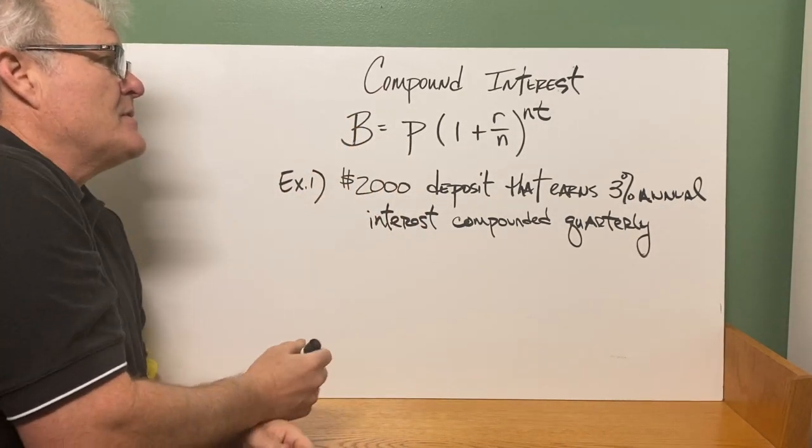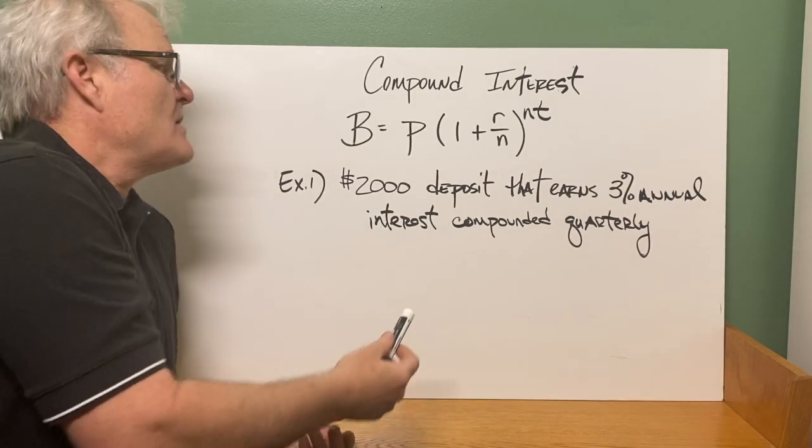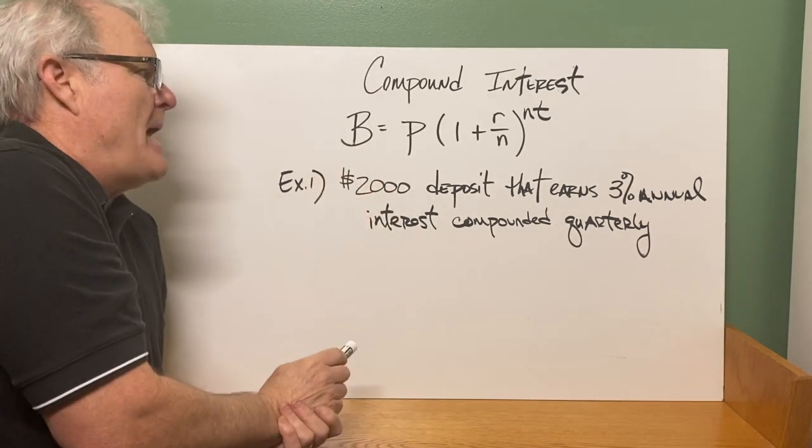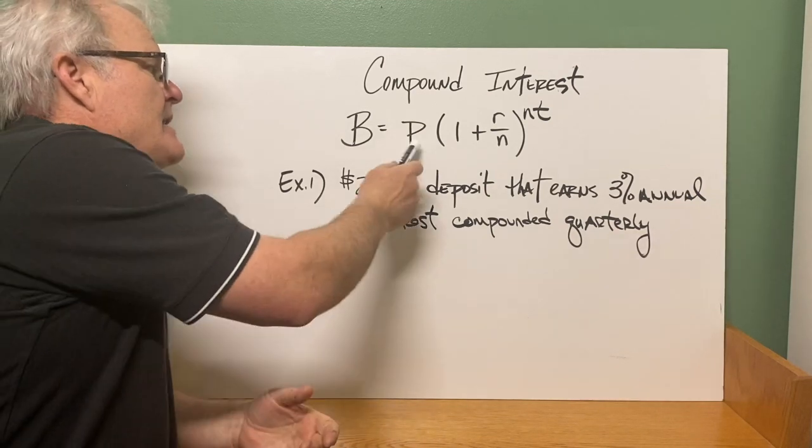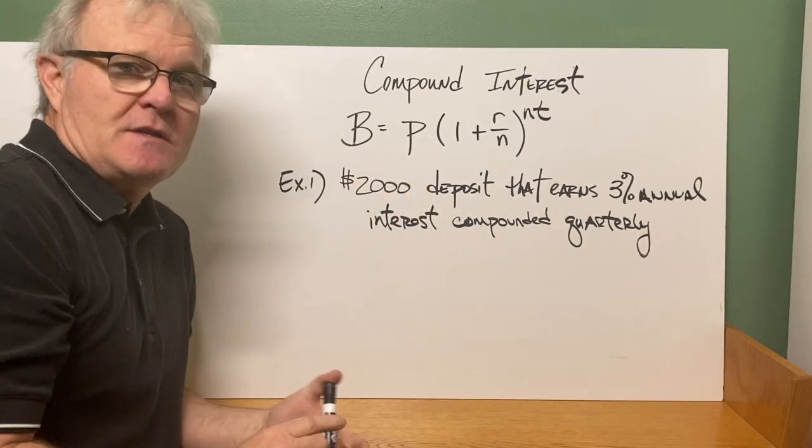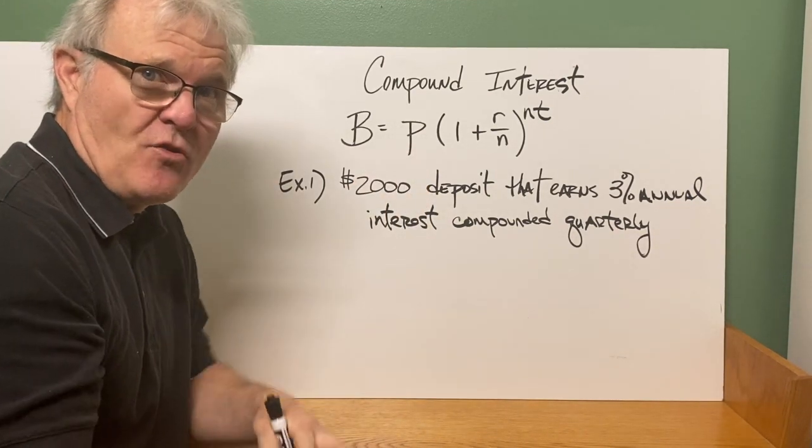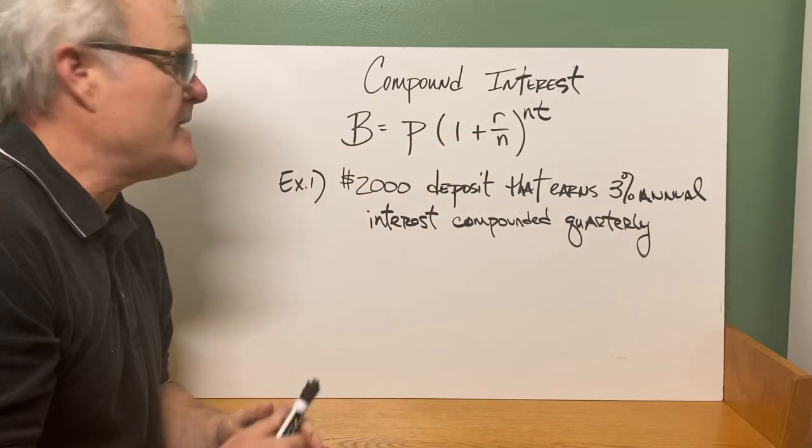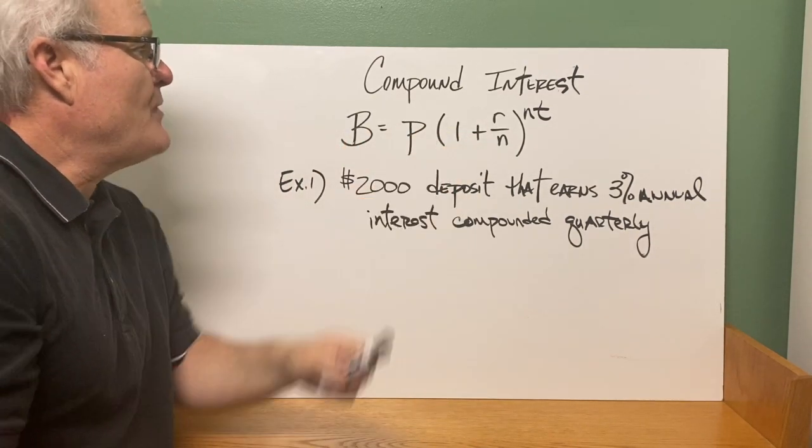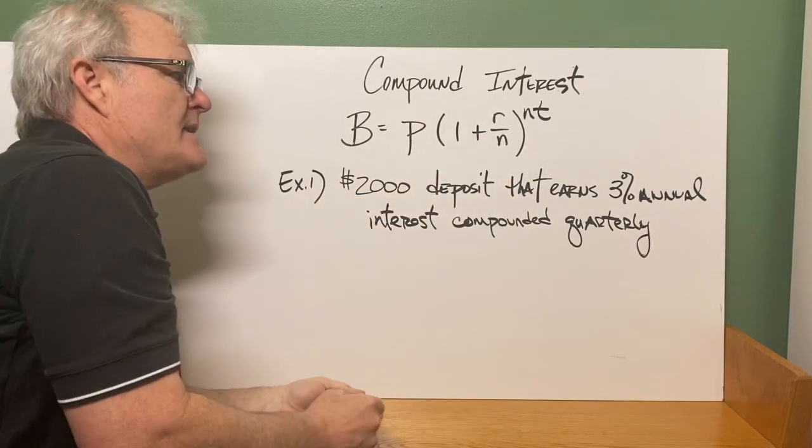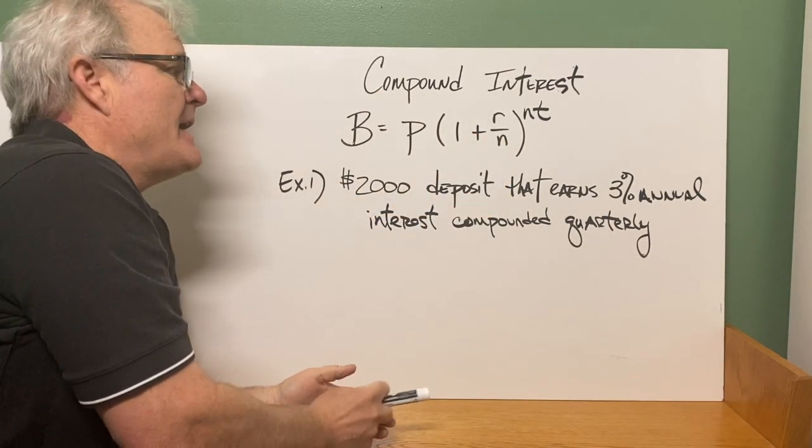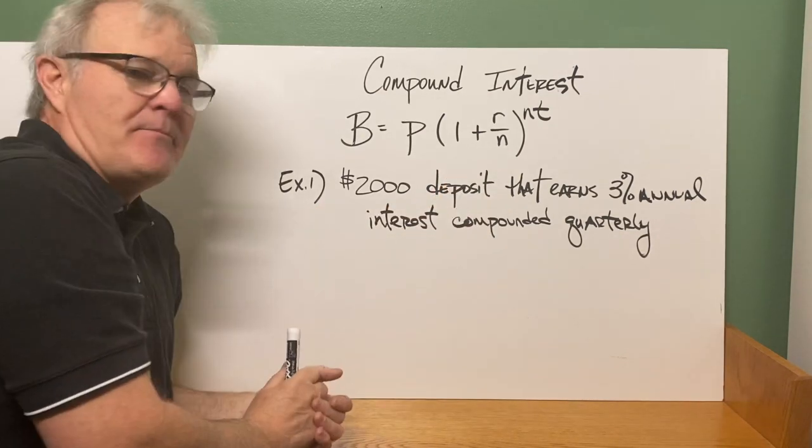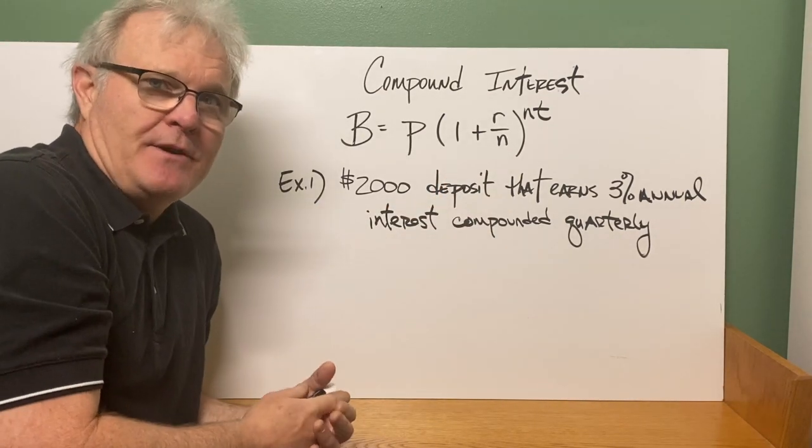And that is an example of exponential growth, which again is compound interest. The equation that I gave you guys in class was B stood for balance in your account, equals P, which represents the principal, how much you either invest or you take out as a loan, because remember this equation works both ways, times 1 plus your interest rate as a percentage, divided by n, which represents the number of times that your money is compounded.